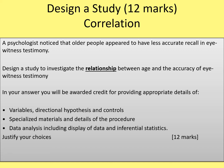This video explains how to do a design-a-study question for a correlation. At the end of Paper 2 you might get a design-a-study 12-mark question, and if it's on a correlation then this video talks you through how to go about that. You'll be given a stimulus that tells you what kind of study it is — this one says: a psychologist noticed that older people appeared to have less accurate recall in eyewitness testimony.